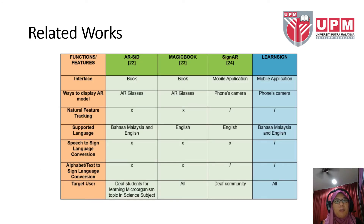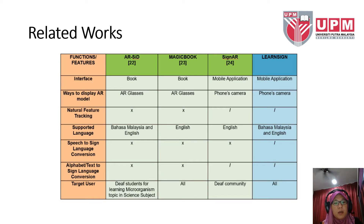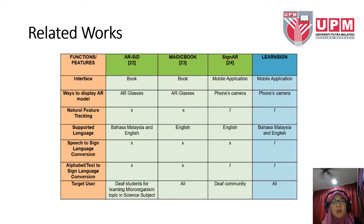The features provided by each system discussed in the previous slide are presented in this table. They can be compared in terms of interface use, the ways to display the AR model, natural feature tracking use, supported language, speech-to-sign-language conversion, alphabet or text-to-sign-language conversion, and the target user. The rightmost column in the table is the proposed system, Learn Sign, with the stated features as shown in the table.